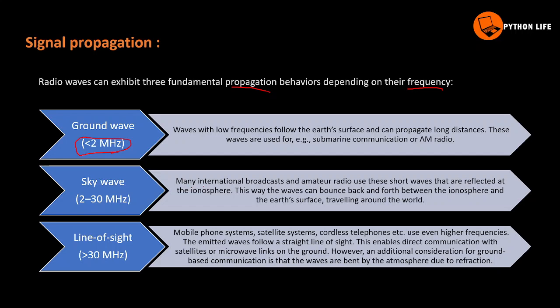In sky wave propagation, many international broadcasts and amateur radio use short waves that are reflected in the ionosphere. These waves can bounce back and forth between the ionosphere and the Earth's surface, operating around 2–30 MHz frequency, and after traveling around the world the waves return.